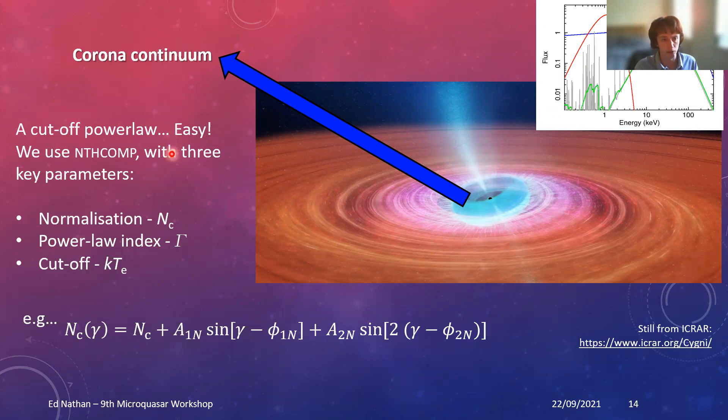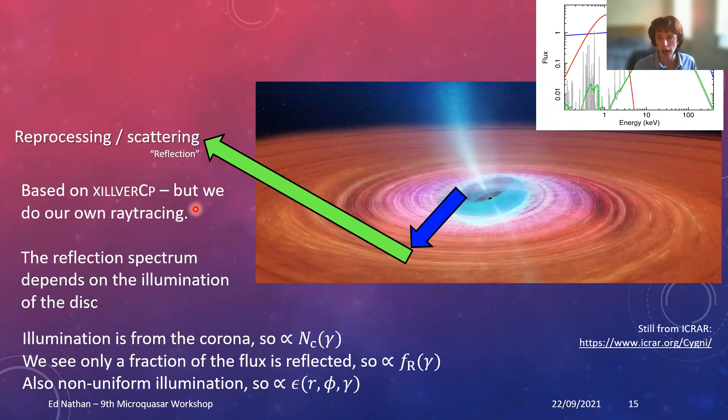Then you want to model it. Going back here, we've got three components. I'm not going to labor this point too much. What we're going to focus on is how we allow them to vary, how we actually model the QPO. Particularly for the corona, we're using NTHCOMP, a power law. For us that's got three key parameters for each one we're going to allow to vary with QPO phase, like this gamma here, with two harmonics. So we're allowing this to vary in two harmonic motion.